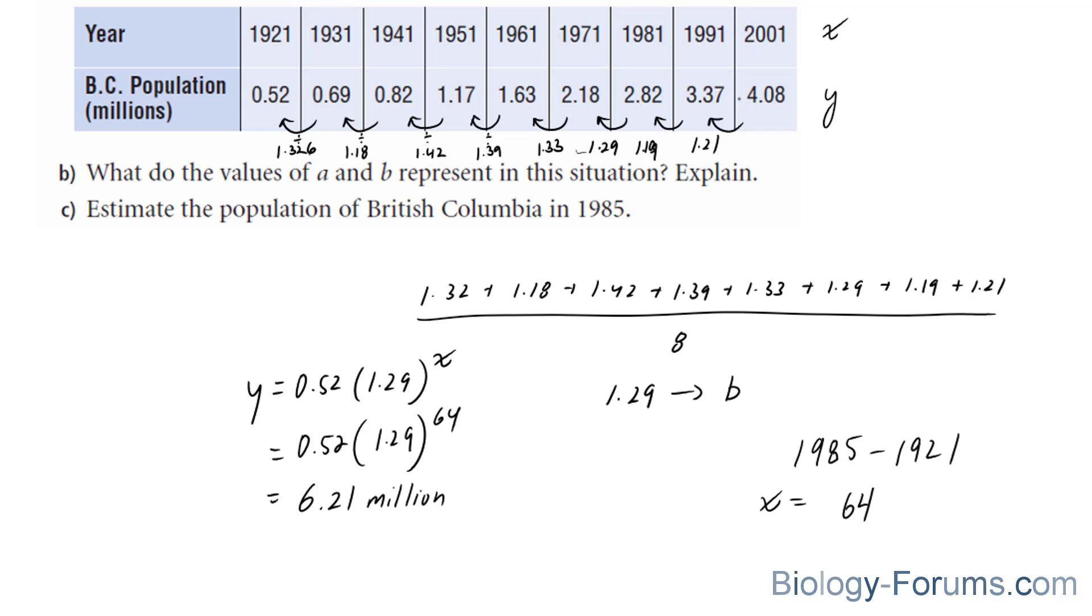Now what went wrong? Notice when we were dividing 0.69 with 0.52, we didn't take into account significant digits. We used 1.326, rather than 1.3, which is the appropriate measure to take. So when you are doing this, make sure that you do take into account significant digits, and that will ensure that your b value is more accurate.